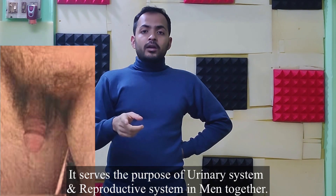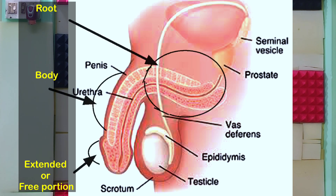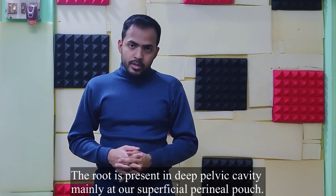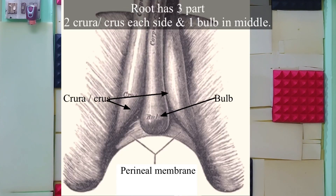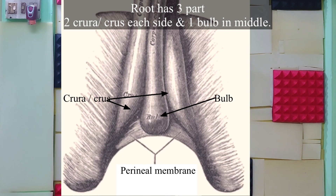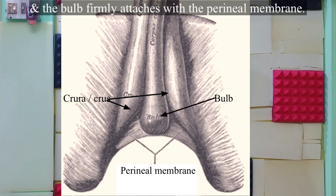As you can see in this photo, our penis has three parts: one is the root, the body, and the extended part or free portion. The root is present inside the deep pelvic cavity, mainly at our superficial perineal pouch. The root has three parts: two crura and one bulb. One crura on the right side, another crura on the left side, and in the middle the bulb. The bulb and crura attach to the inside margin of the pelvic arch, and the bulb is attached to our perineal membrane.